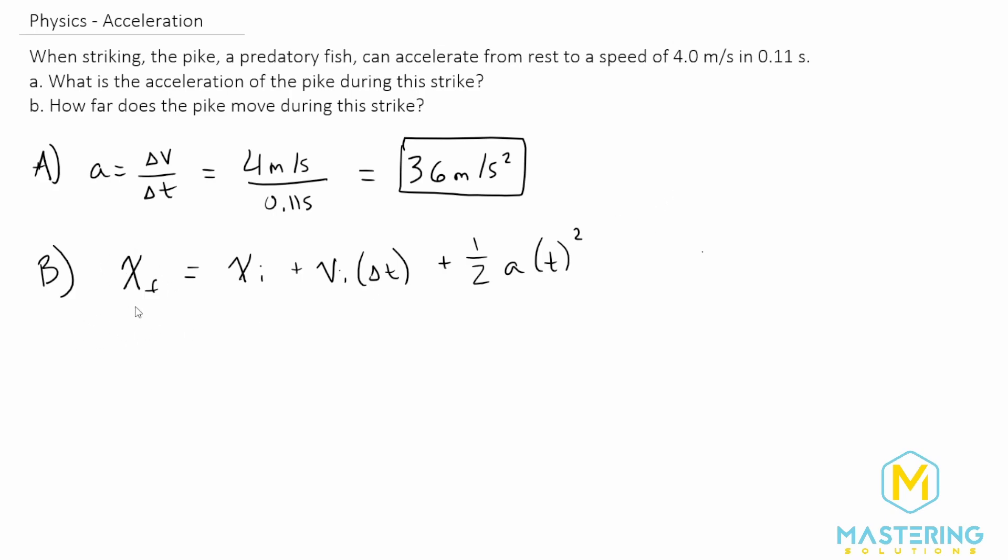So what we need to solve for is the x final, which is convenient because we don't have to do any rearranging. If we go through the formula, the x initial is going to be 0 because it's starting from rest, so we can get rid of that.